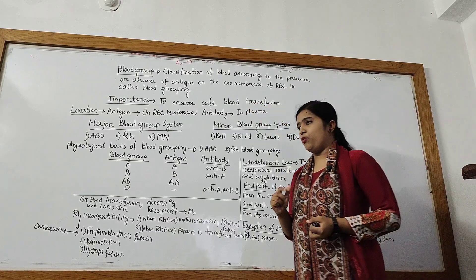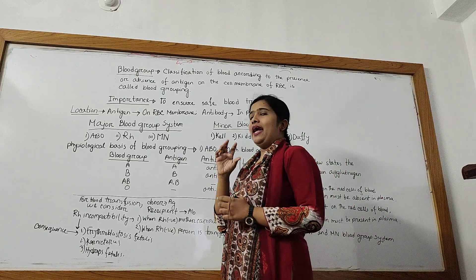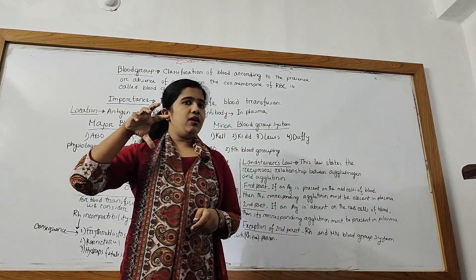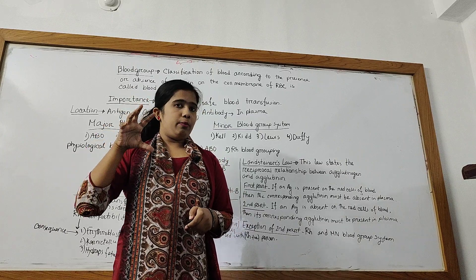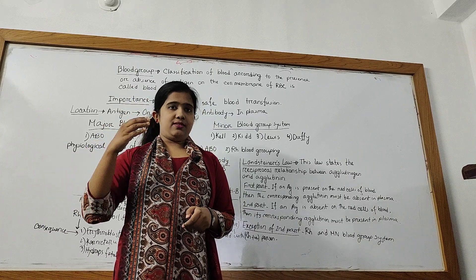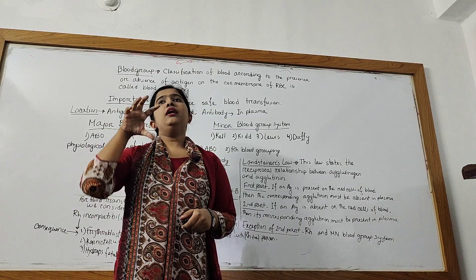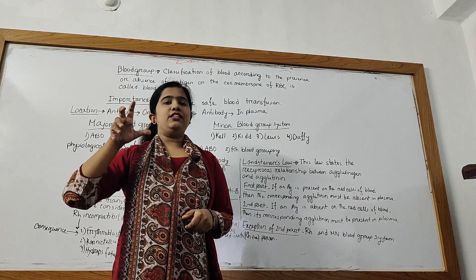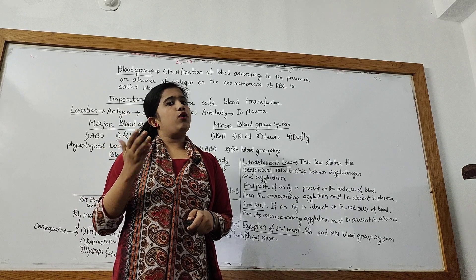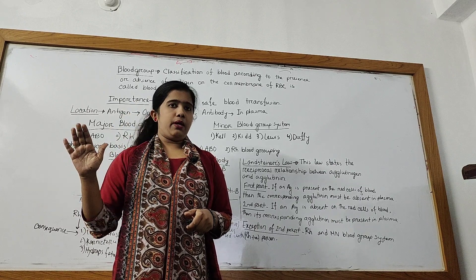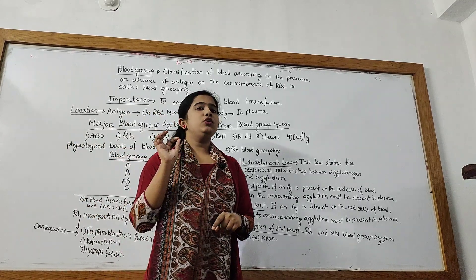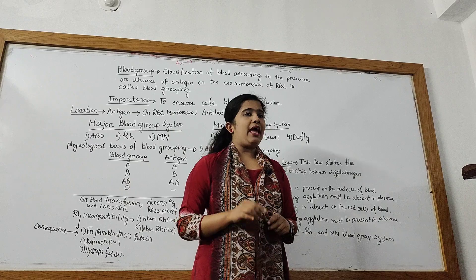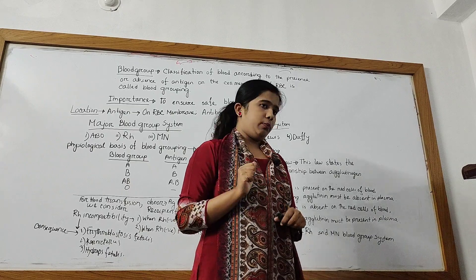The antigen is always located on the cell membrane of RBCs — the RBC membrane. And the antibody is always in the plasma. The antigen should be called agglutinogen and the antibody should be called agglutinin.